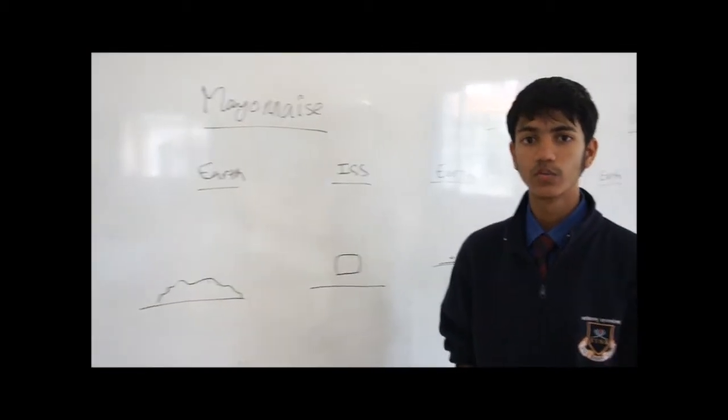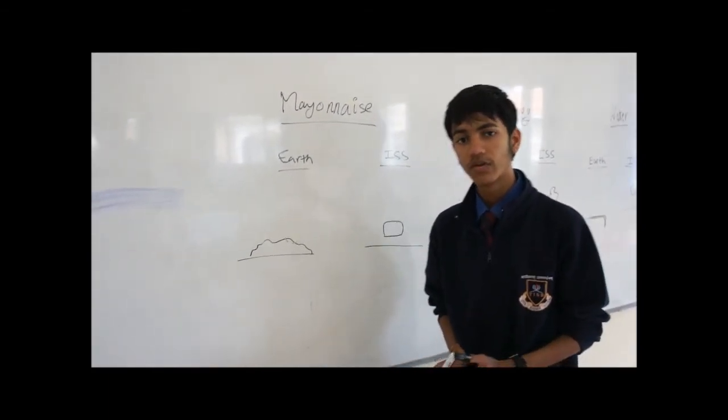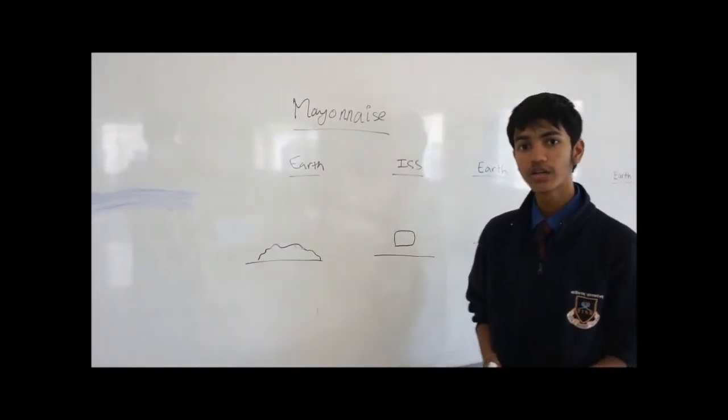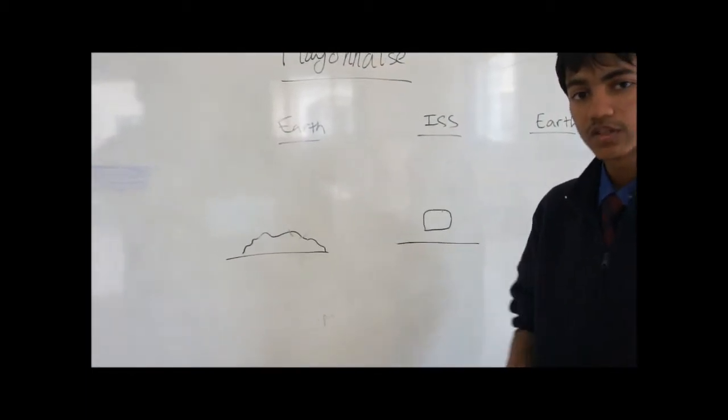Let's start. On Earth, mayonnaise, which is a Bingham plastic, resembles a solid under low pressure and will mimic the properties of a solid until it is subjected to high pressure such as under the action of a spoon, in which case it will become a fluid and will start flowing.